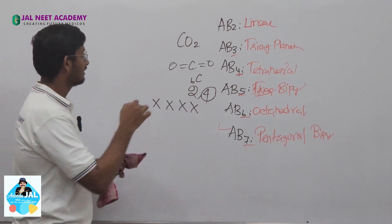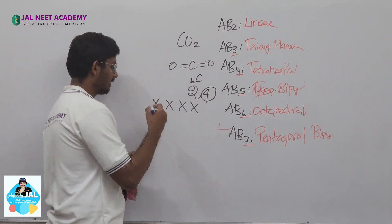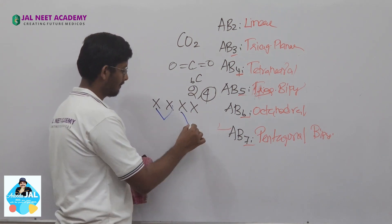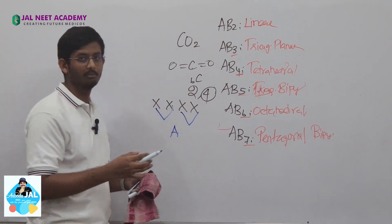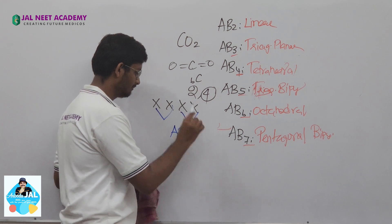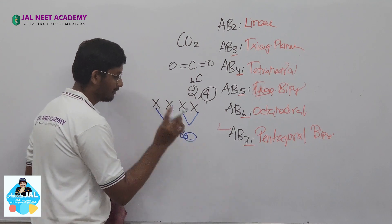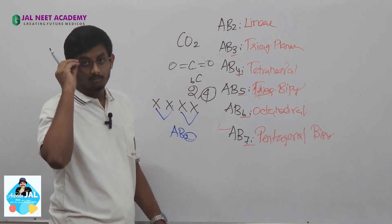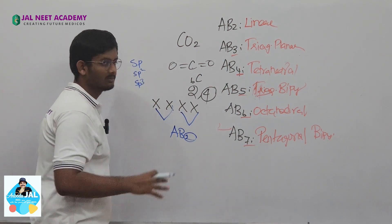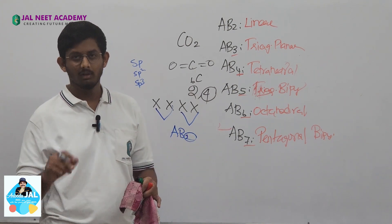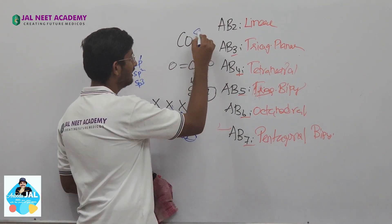Oxygen can form double bonds, so on the double bond carbon dioxide: the central atom is carbon, and it is AB2. So what is the shape of carbon dioxide? Linear. And what is the hybridization of carbon dioxide? It is sp.